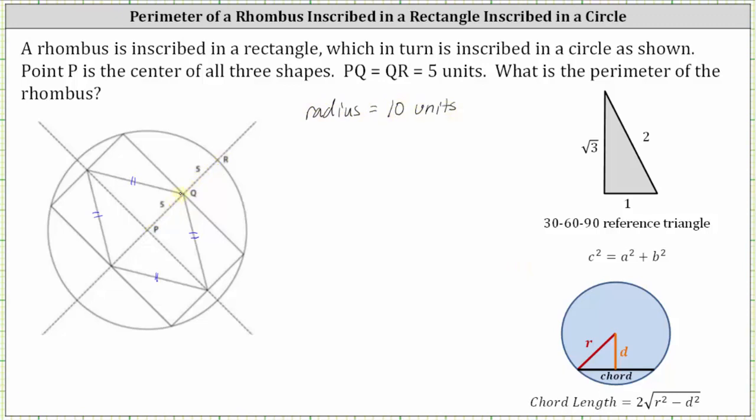From here, because the rhombus is inscribed in the rectangle, the diagonals of the rhombus cut the larger rectangle into four smaller congruent rectangles. Let's focus on one of those smaller rectangles. Notice how the diagonal that's sketched is one of the sides of the rhombus.